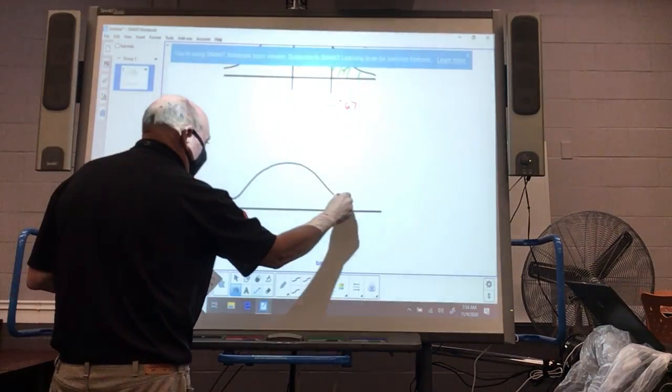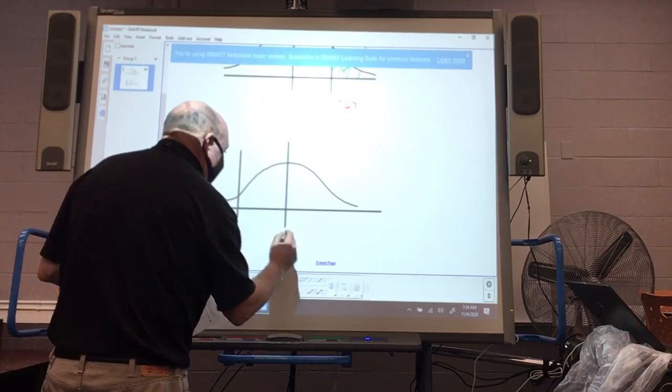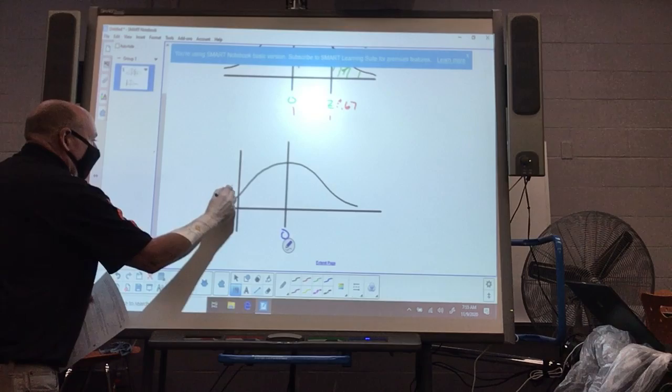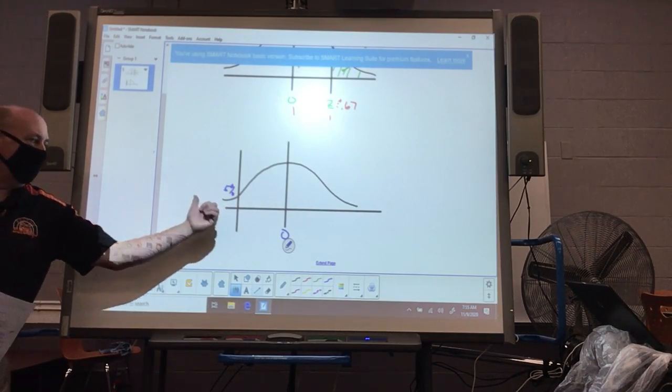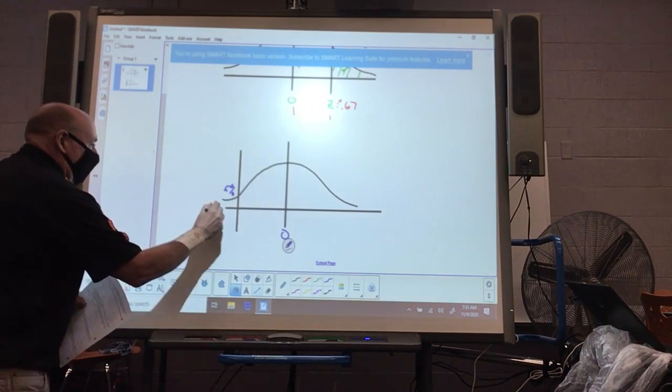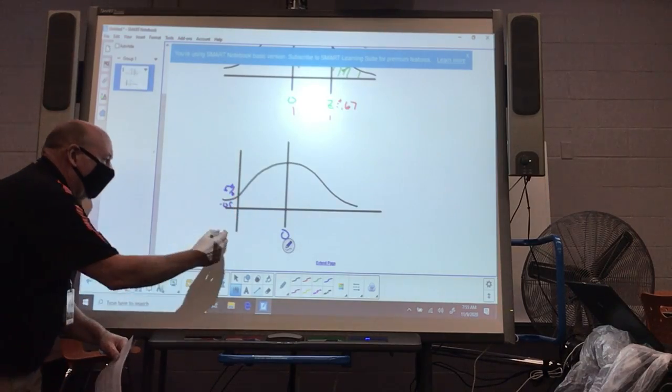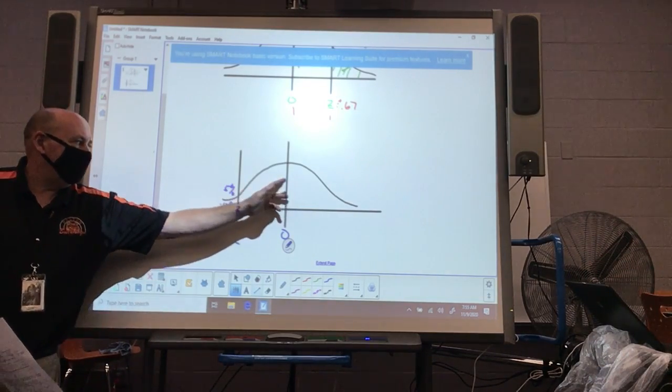What's the cutoff score for the bottom five percent that have to attend summer school? Well, the first thing we have to determine is we need to determine a z-value. This here is the bottom five percent, which means this area right here to the left has to be what? 0.05. If this is five percent, what percent goes from this z-score to zero? If this is five percent, what percentage is this going to be, Wyatt? 45 percent.